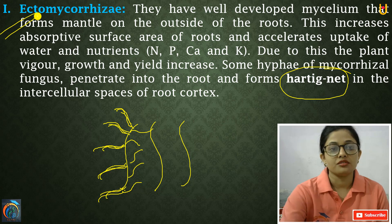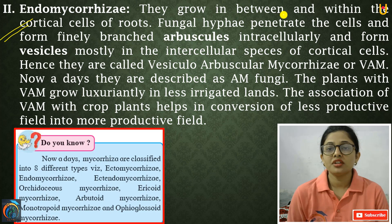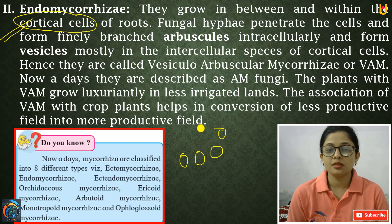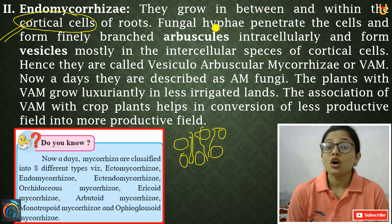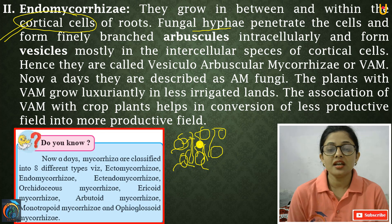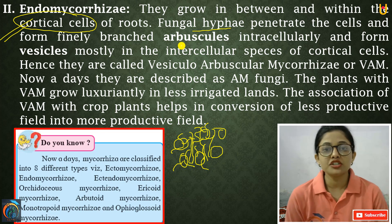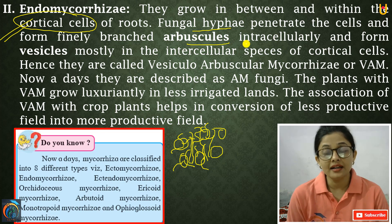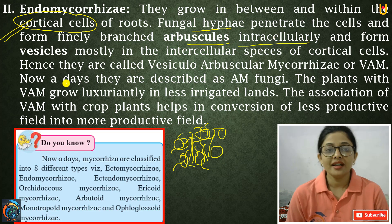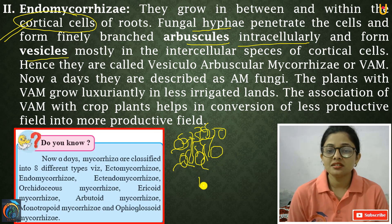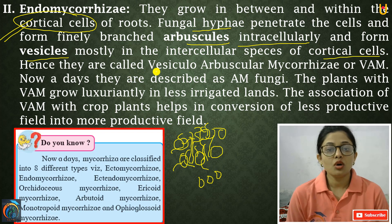This is the ectomycorrhizae. In endomycorrhizae, the hyphae penetrate the cortical cells of the roots. The degraded branches are finely different and are called arbuscules, which are intracellular structures. There are also many vesicles — small organs within the cortical cells.